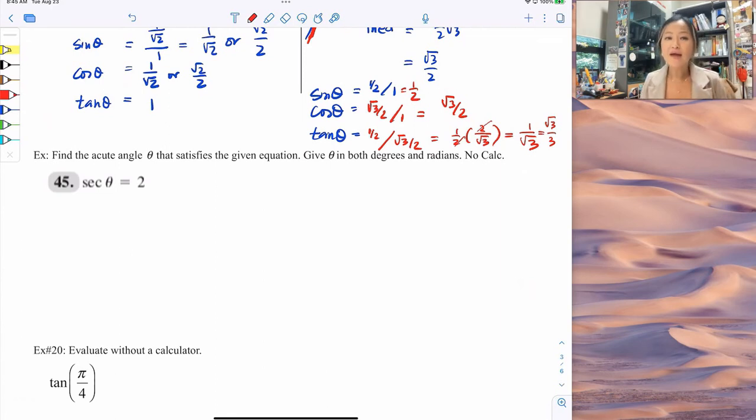All right, find the acute angle theta that satisfies the given condition. Given theta in both degrees and radians. No calculators. We can't use our calculators. So we know for sure secant of theta is 2. That's really weird, okay? Okay, secant of theta is 2. If you want to draw this triangle, you can, but I don't like to think in reciprocal identities. I like reciprocal trig functions. I like to think in normal. So that means cosine must be the reciprocal of that, so it's half. That really helps.